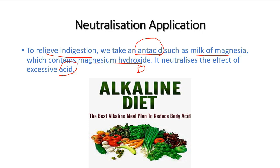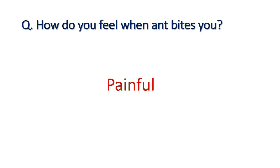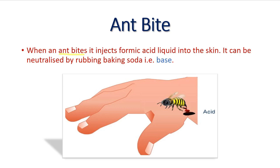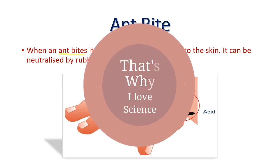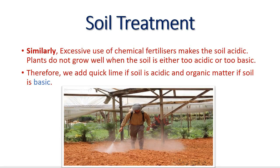Another application of neutralization — how do you feel when an ant bites you? When an ant bites, it injects formic acid into your body. Similarly, when a mosquito bites, it releases formic acid. To neutralize the effect of the acid, we rub baking soda — a base — on the affected part. This is the power of science: it not only educates you but also helps you combat problems in life.